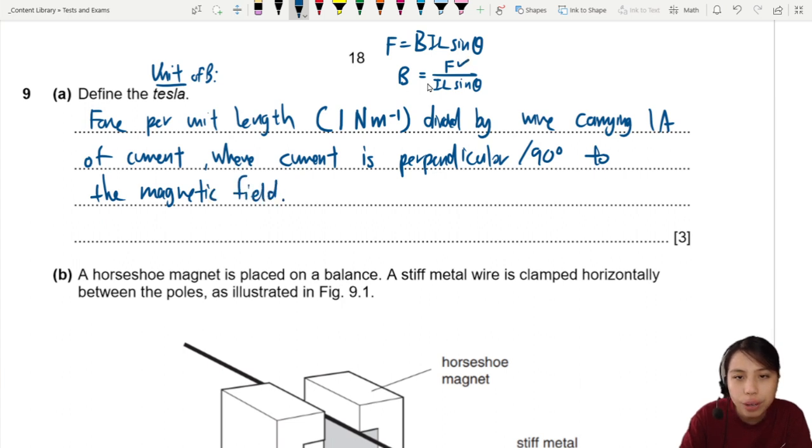So that's why make sure you mention force, current, length. Length is already there. And angle. 90 degrees. By definition, that's how we define a Tesla. How much is one Tesla?